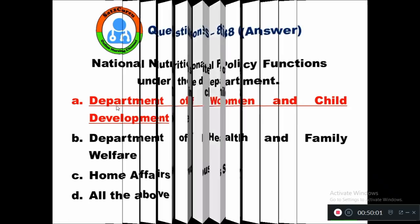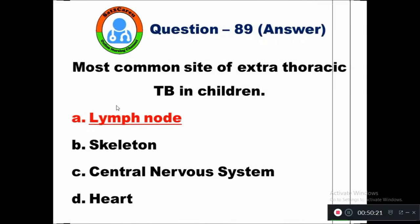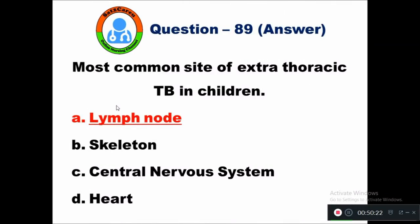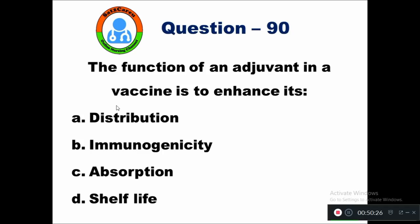Question 89: Most common site of extra-thoracic tuberculosis in children is — option A lymph node, B skeleton, C central nervous system, D heart. The right answer is lymph node.